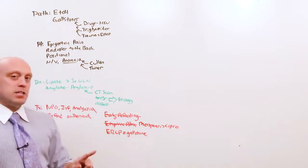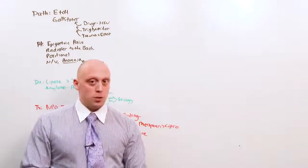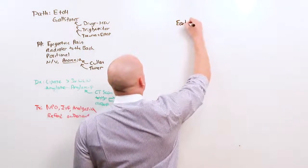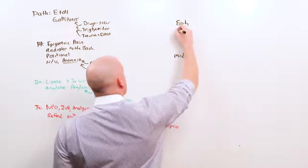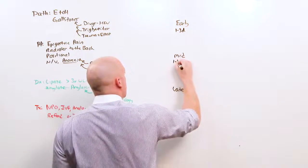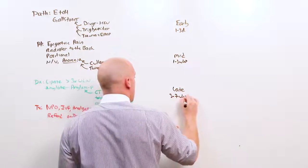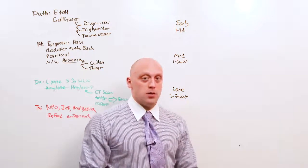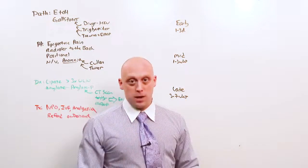But after the pancreatitis is over, you may still have problems and the complications of pancreatitis you do need to know about. I've broken them down into three categories. Early complications, mid complications, and late, based on the time of onset. Early complications usually happen in the first couple of days. Mid-level complications happen in the first couple of weeks. And late complications take weeks to months to develop. And what you need to do is be able to recognize the clinical scenario in which the complication arises, how to diagnose it, and then how to manage it.